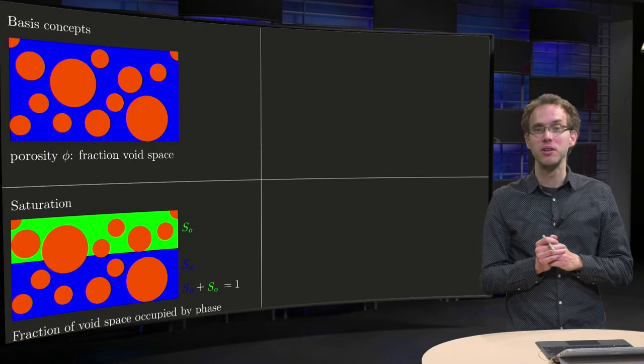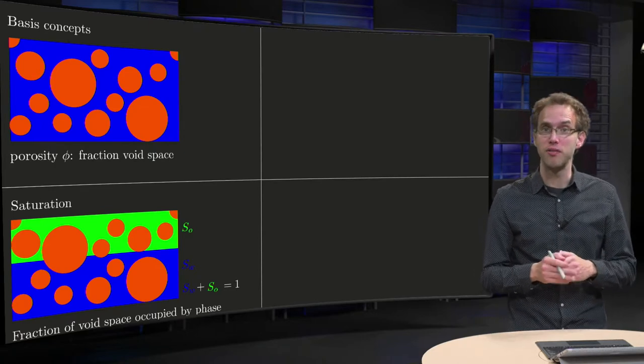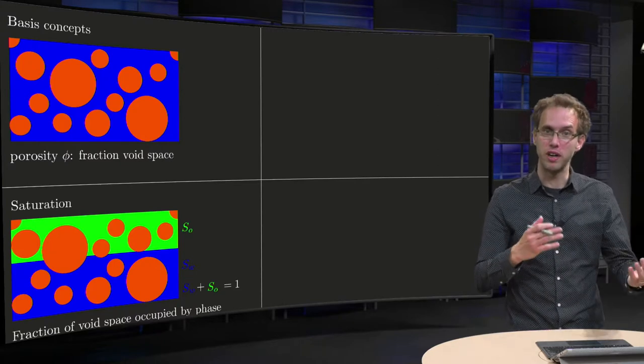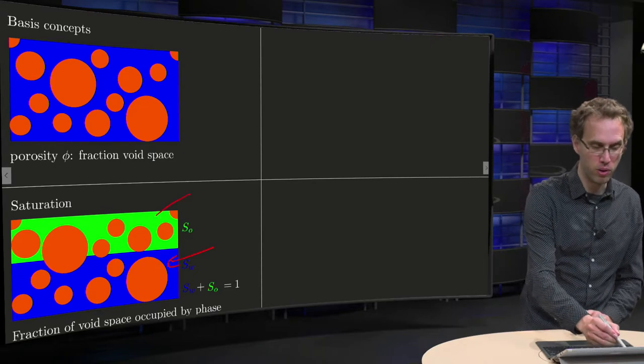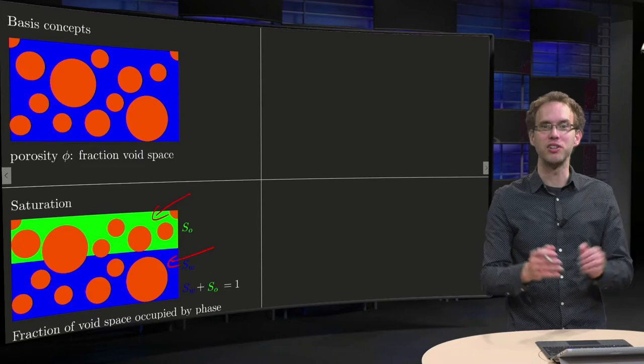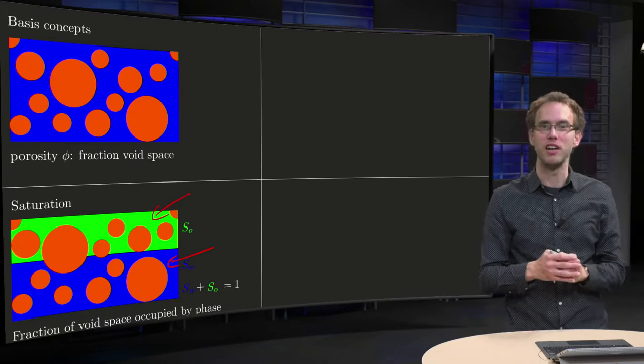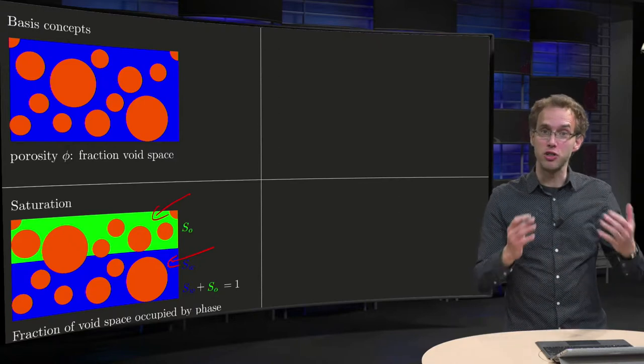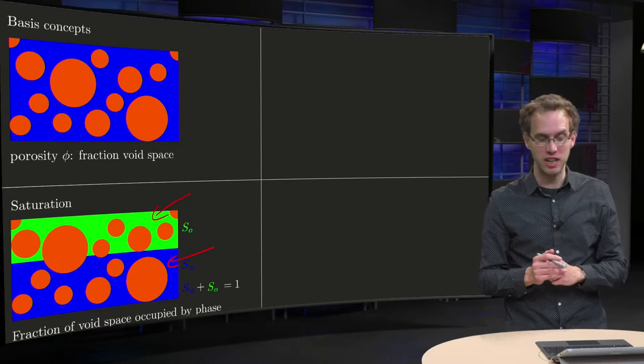Now suppose you don't have one fluid in your rock, suppose you have say two of them, for example water and oil or water and gas. So in this picture over here I made the water blue and the oil green. Well of course they are not really nicely separated like this, just on top of each other, but just for the illustration to see what happens. Now then there is a certain amount of water there and a certain amount of oil, but how do we express that?